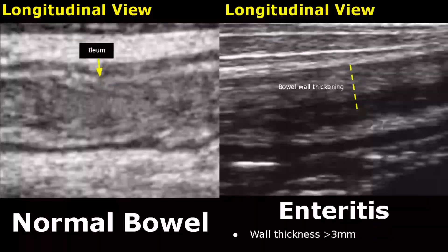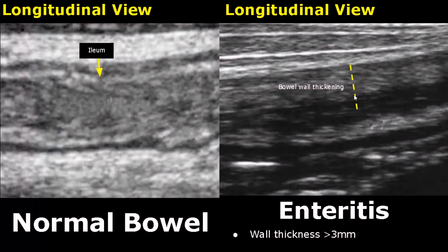Enteritis is an infection of the small bowel. On ultrasound, the bowel wall thickness will be increased due to inflammation — it will be greater than three millimeters.